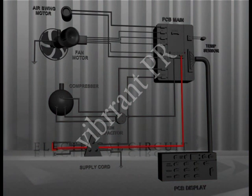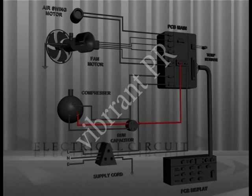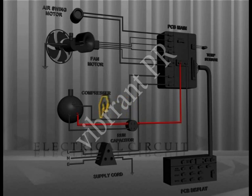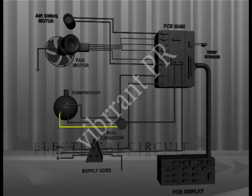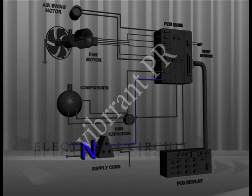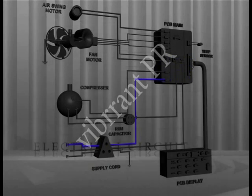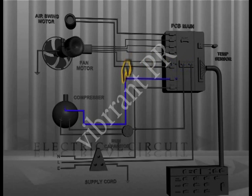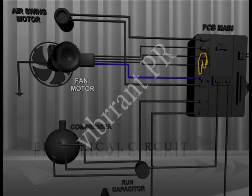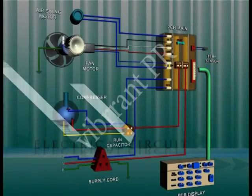The live wire L goes to terminal 3 of the relay in the PCB main. The live wire returns from relay terminal 4 to the running terminal R of the compressor through the run capacitor. The yellow wire from the run capacitor goes into the starting terminal S of the compressor. The neutral wire N goes to PCB main terminal P7 and returns from terminal P6 to the common terminal C of the compressor. The supply goes to the fan motor from the inbuilt connections of the main PCB.